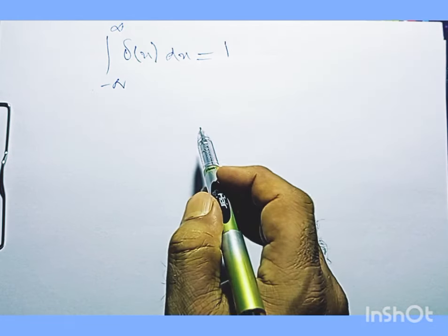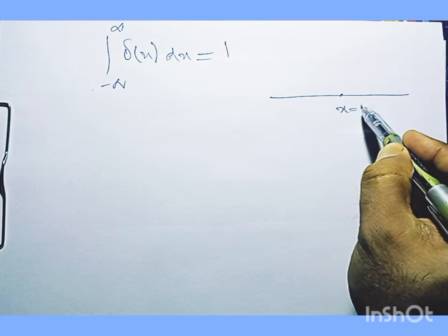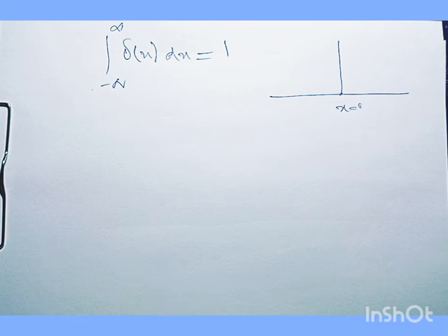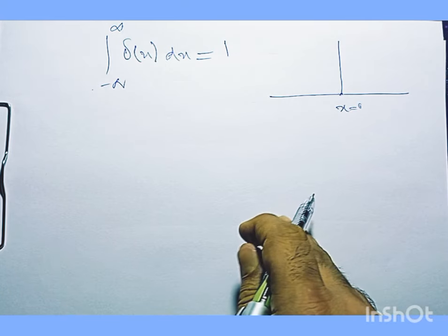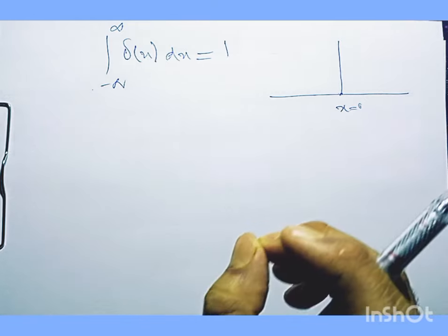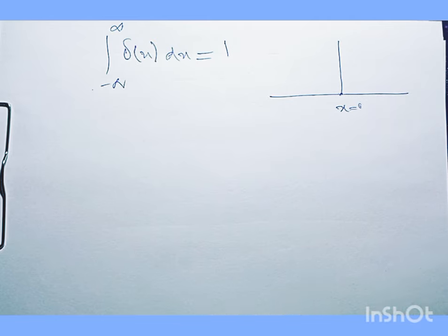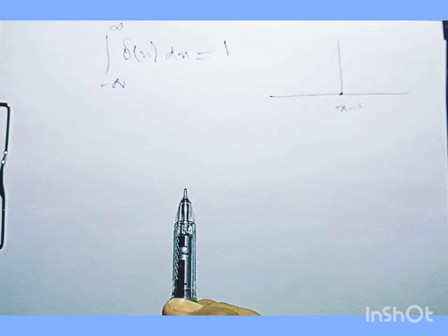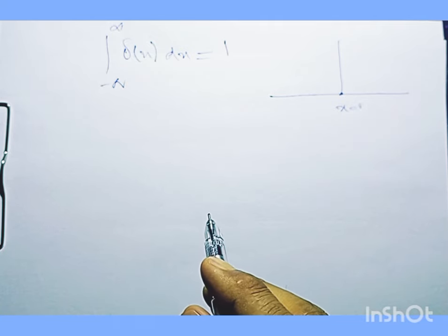Technically speaking, the Dirac delta function is not a function at all, because it is not finite at x equals zero — it is infinite there. Mathematicians generally call it a generalized function or a distribution. It is an extremely useful tool and a useful construct in theoretical physics. It can be exploited in domains like electrodynamics — for example, in problems involving charge density at a point.